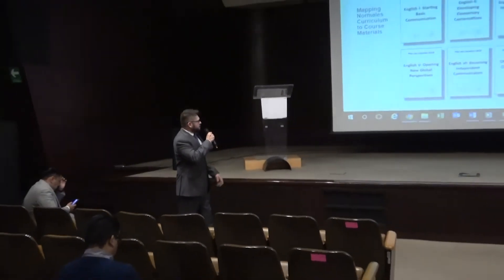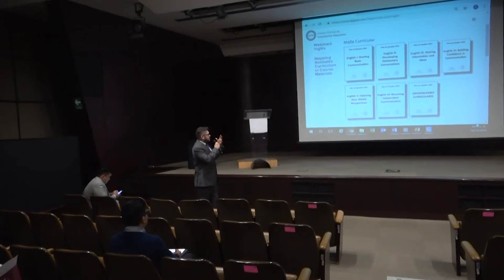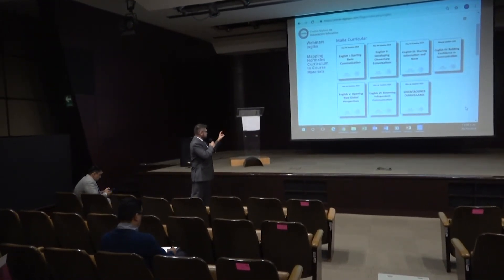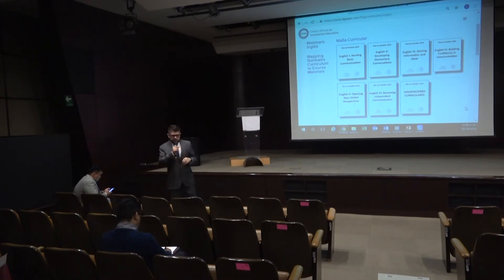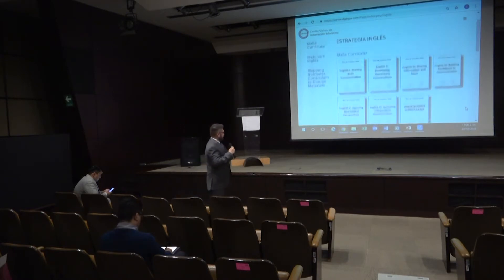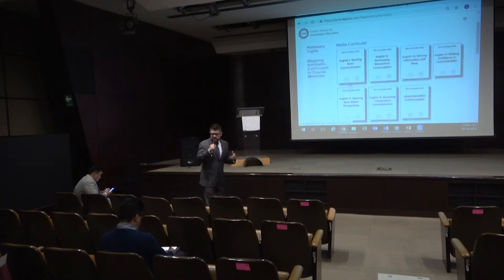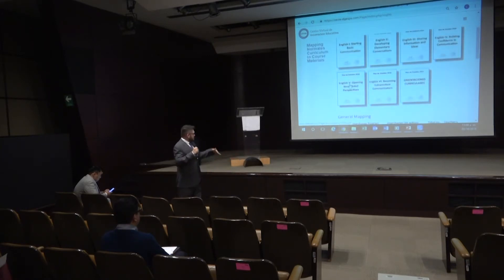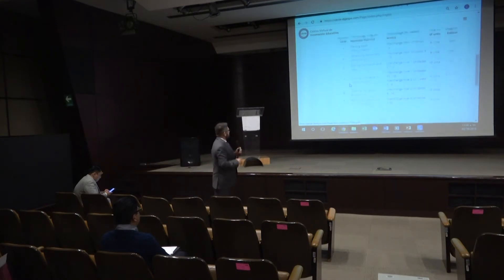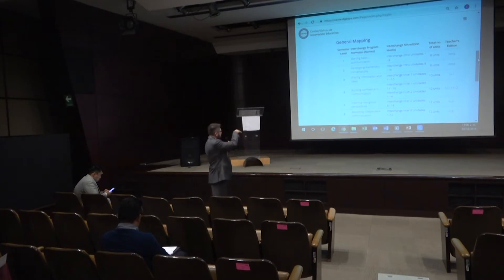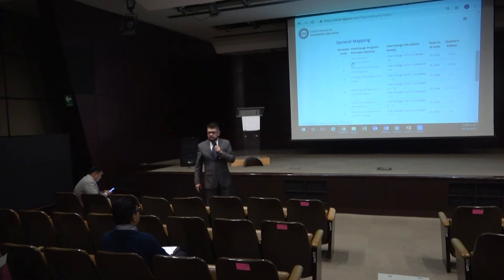We have six courses, as you know. They are not organized by semester but by levels. The first one is starting basic communication, developing elementary conversation, sharing information and ideas, building confidence in communication, opening new global perspectives, becoming independent communicators, and the rest of the documents on this webpage. If you click one of them, you will find the complete English course. You can also click on the general mappings and go directly to the English course.